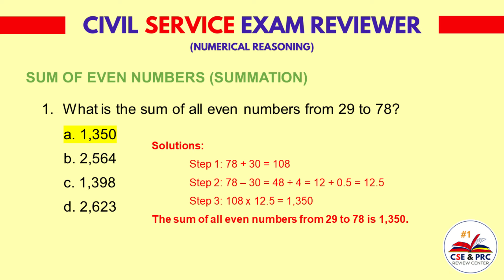Step 3: 108 times 12.5 is equal to 1,350. The sum of all even numbers from 29 to 78 is 1,350.